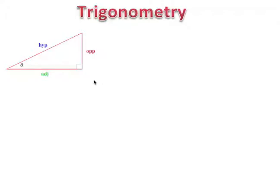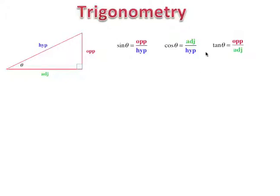We have three ratios that we're going to look at. We're going to look at the sine ratio. Sine is always the opposite side over the hypotenuse, so sine of theta is opposite over hypotenuse. Another ratio is adjacent over hypotenuse, and that's called the cosine. And we have the tangent function — the tangent of theta is the opposite over the adjacent. We also have the inverses: hypotenuse over opposite is cosecant, hypotenuse over adjacent is secant, and adjacent over opposite is cotangent. But we're just going to talk about the first three.